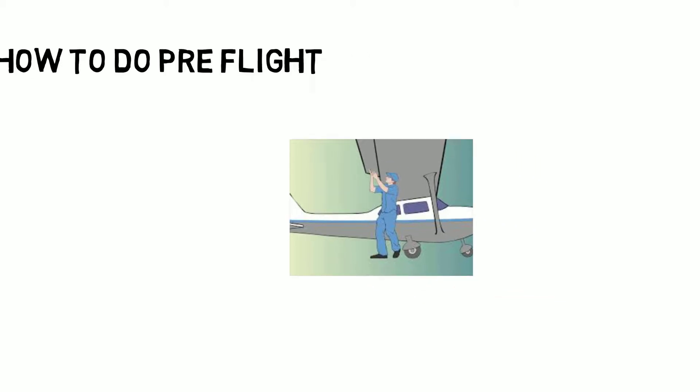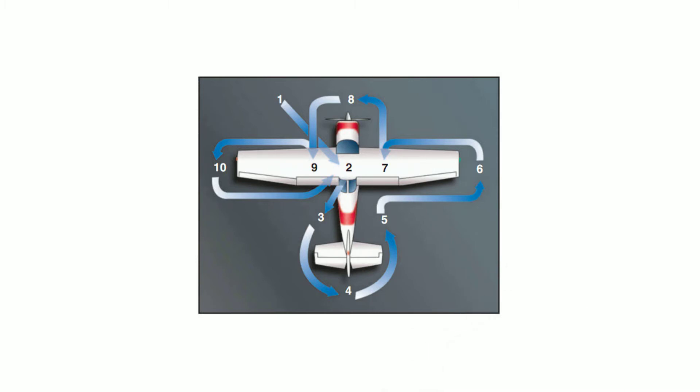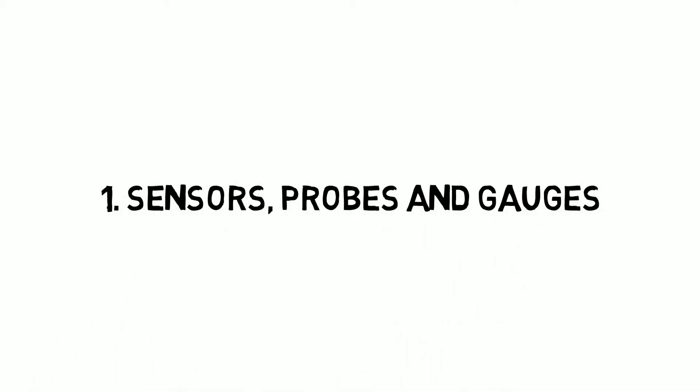360 walk around for pre-flight checks. Initially person who is performing the inspection starts from left side of nose and does 360 degree walk around. In this walk around flight crew check following things.